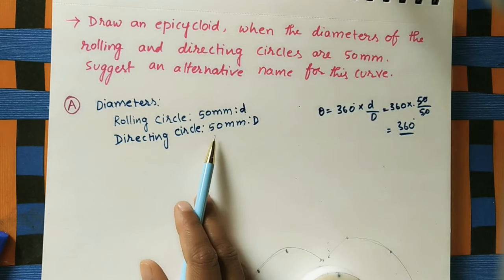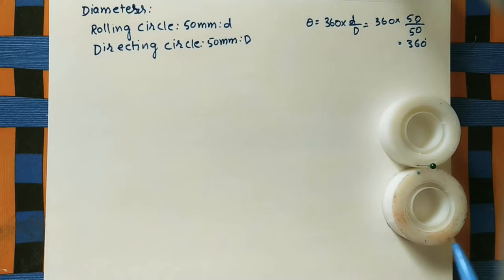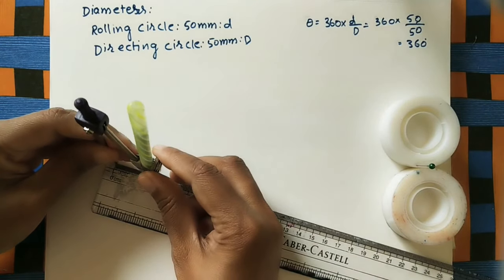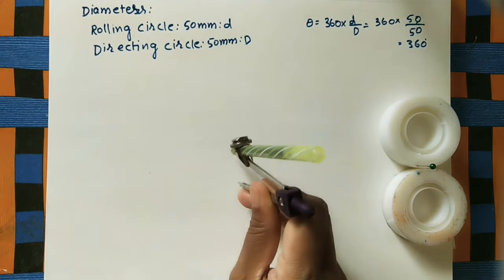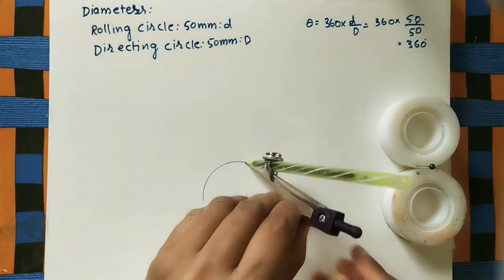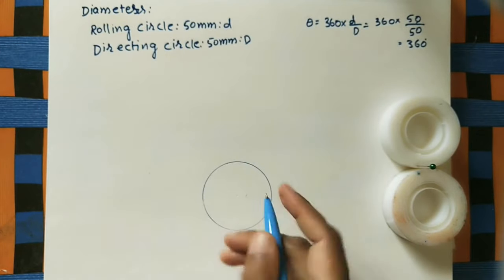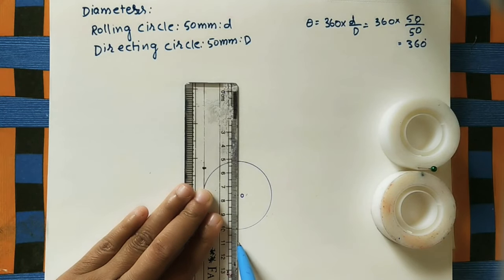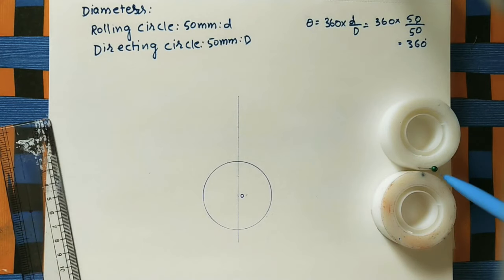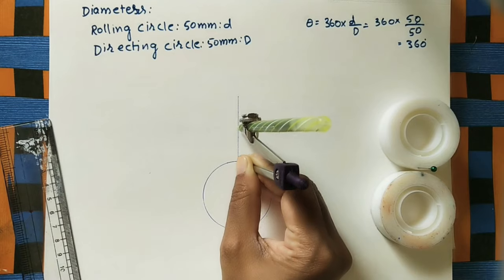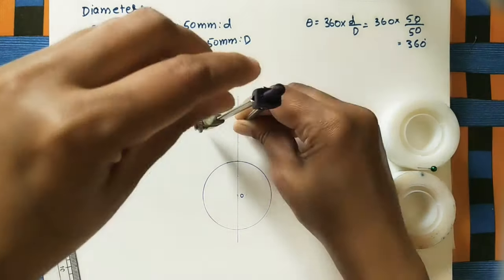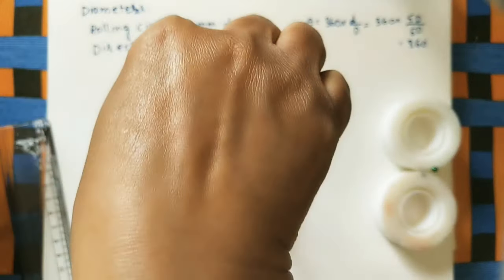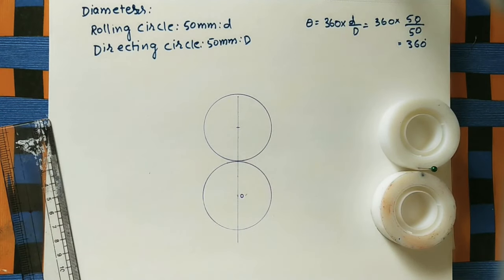Now we draw the diagram using instruments. First, draw the directing circle with diameter 50 mm, so take radius 25 mm using a compass. Mark the center as O. Next, draw one more circle for the rolling circle — always remember the centers are on the same line. Draw a vertical line and place the rolling circle so that it touches the directing circle at point P. Both circles have the same radius.